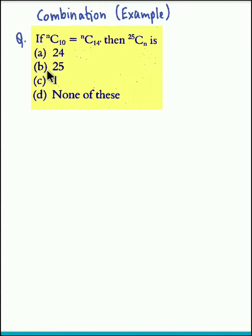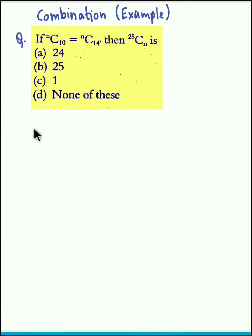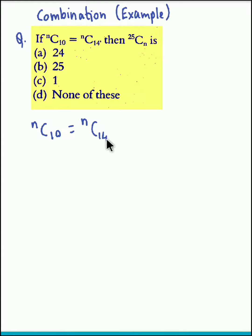Hello and welcome back. We now take an example from the topic combination. The question is: if NC10 equals NC14, then 25CN is what? So let us consider the given equation: NC10 is equal to NC14.